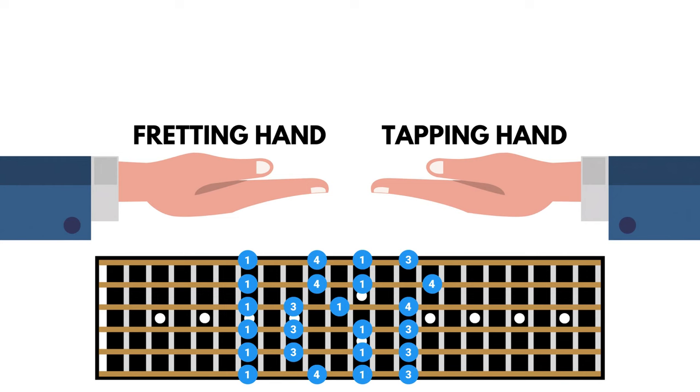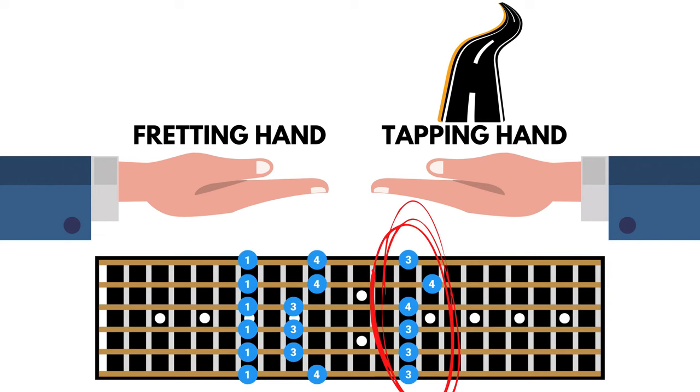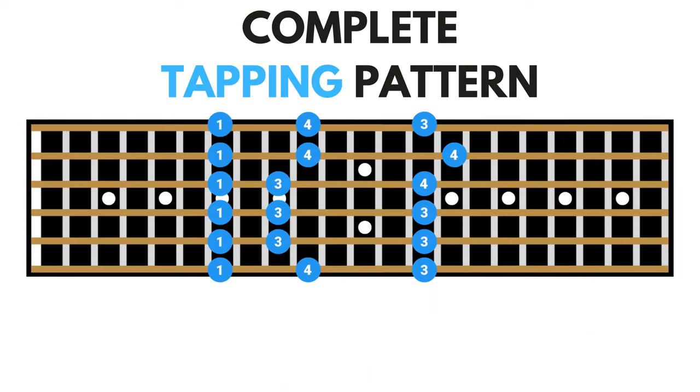And from here, we now need to just eliminate these notes from position 3. There's no reason for this other than it leaves us with a very simple path for our tapping hand to navigate through. At this stage, of course, you will need to combine both the fretting hand and tapping hand to form a playable pattern.